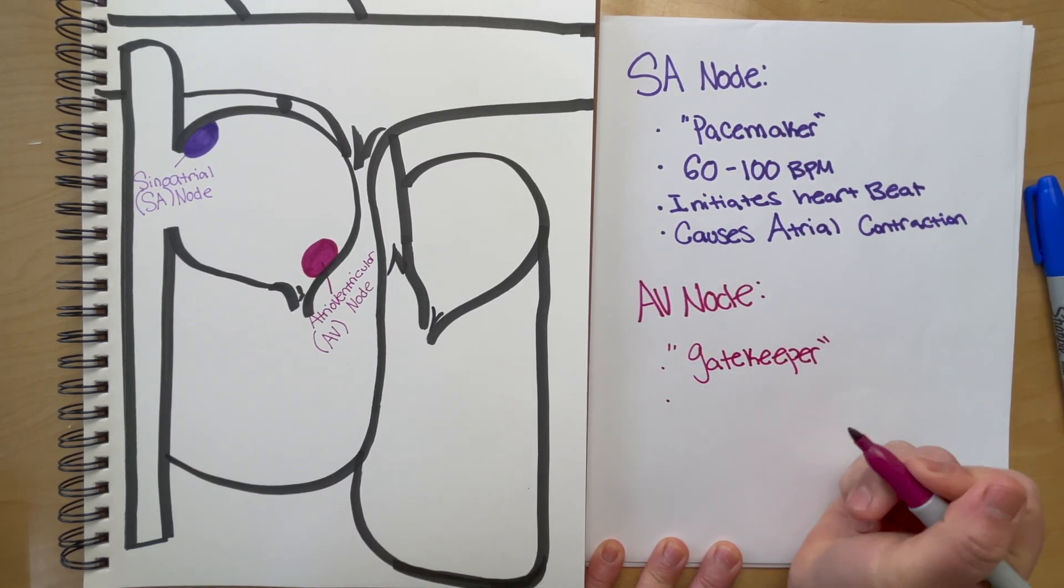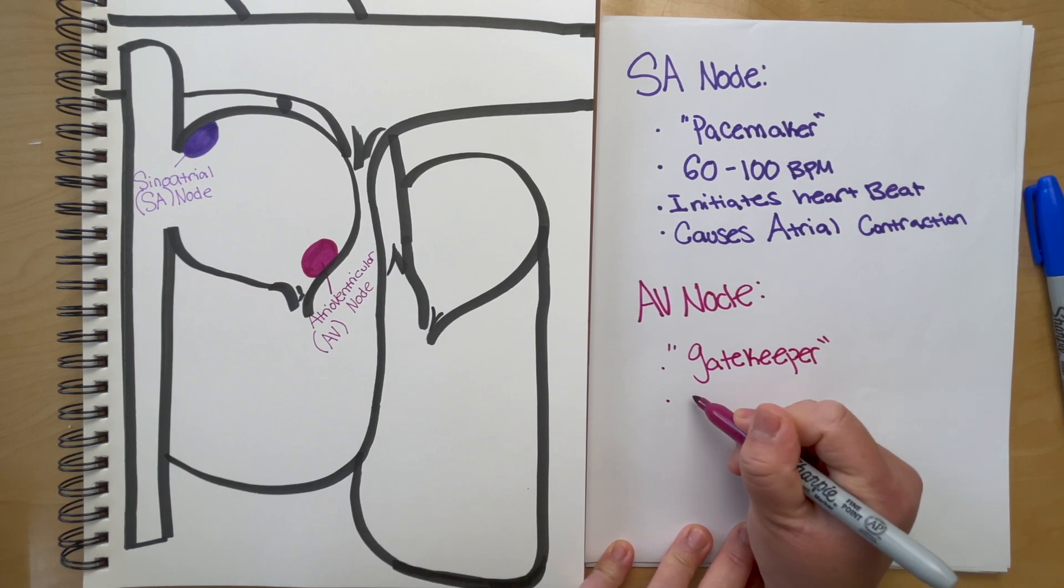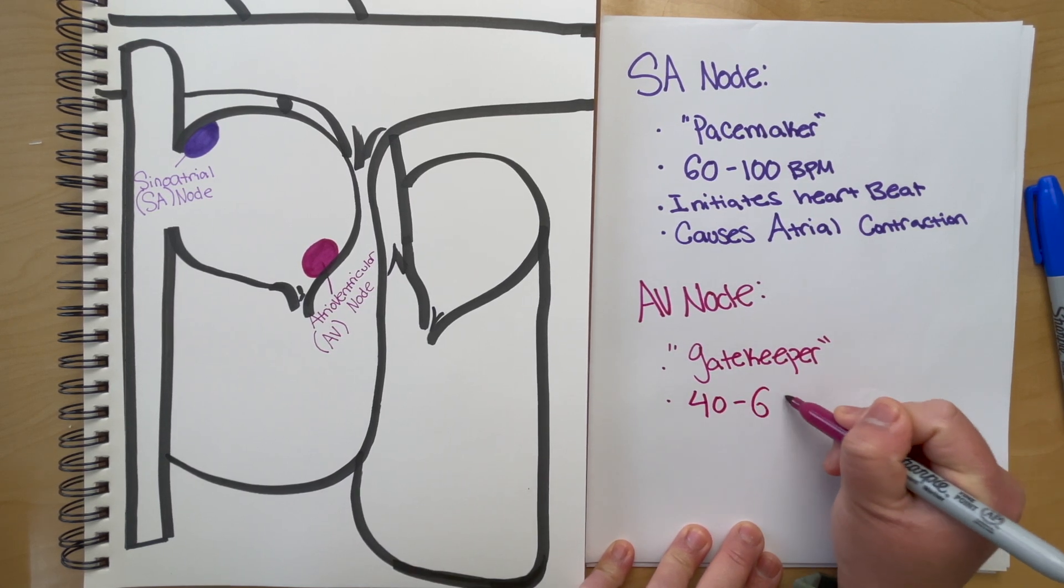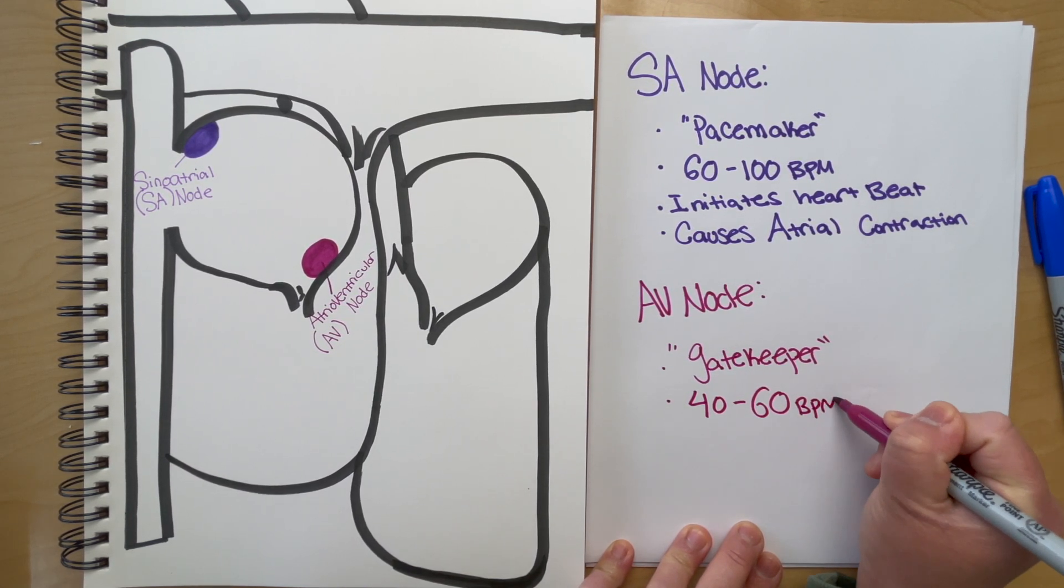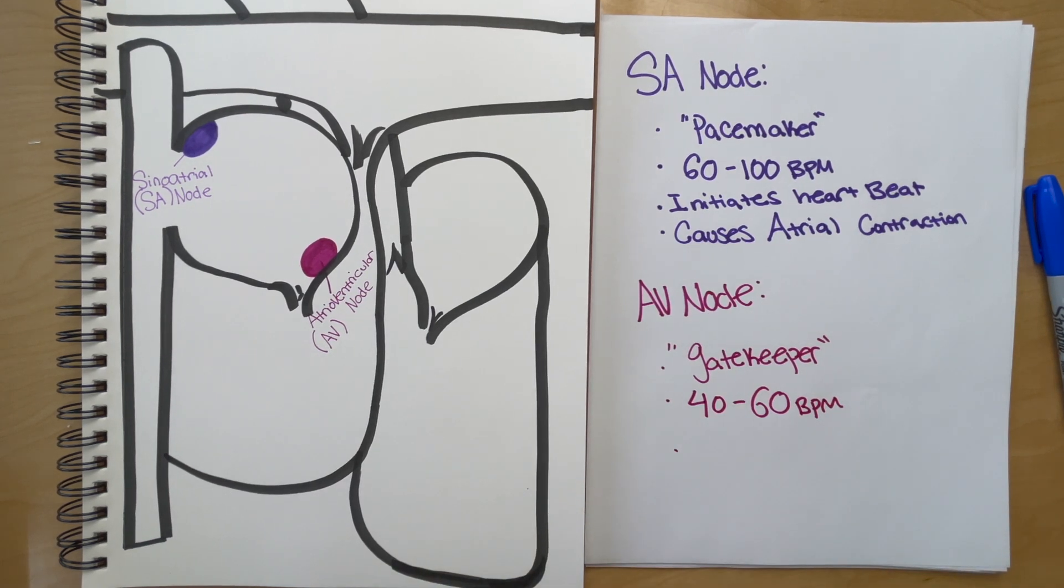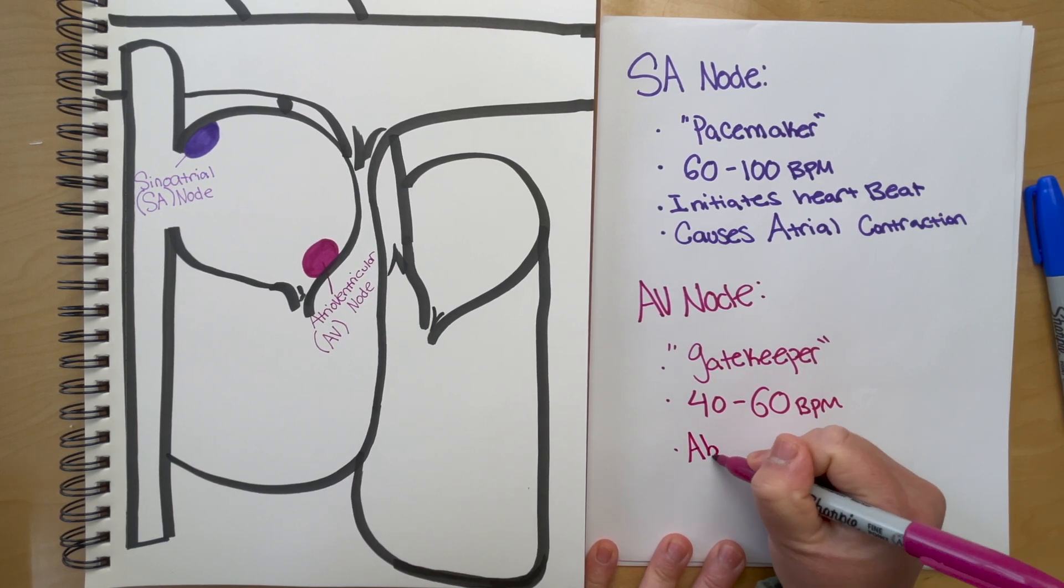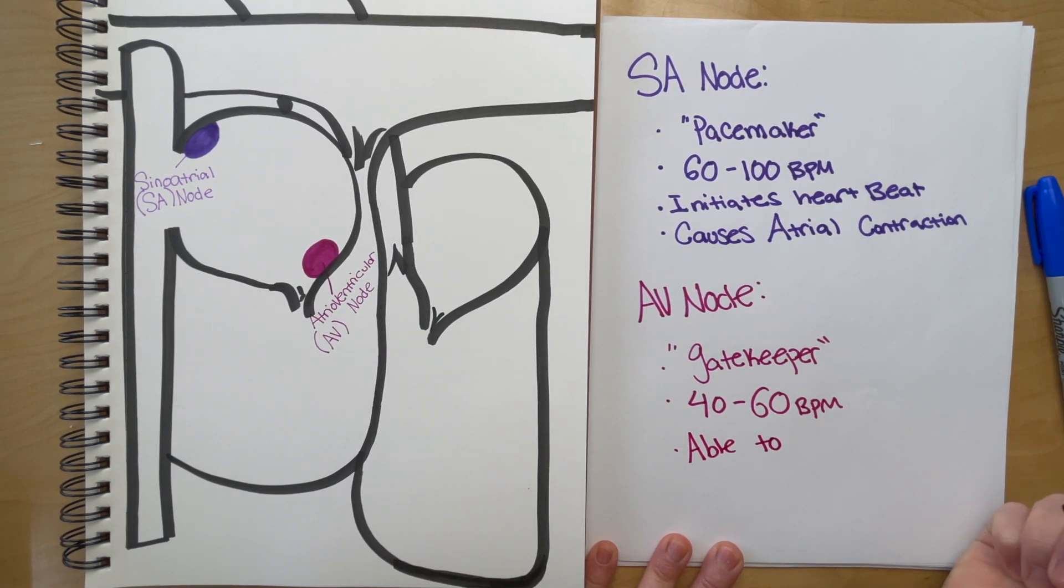The AV node is able to initiate the heartbeat. It generates a rate of 40 to 60 beats per minute, which is significantly slower than the SA node, but it's still able to generate impulses or heart rates.